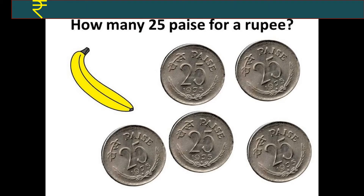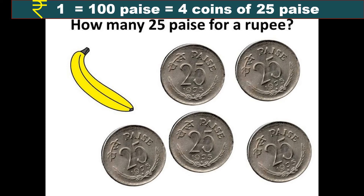I want to buy this banana, which costs 1 rupee, and I have 5 coins of 25 paise. So after buying this banana, how many coins will be left with me? Now we know that 1 rupee is equal to 100 paise, that is 4 coins of 25 paise. So I have 1 coin extra. So 1 coin will be left with me after buying this banana.